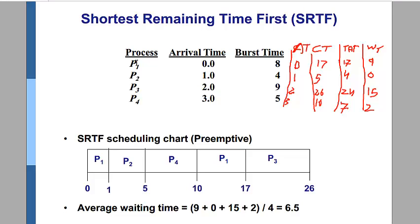So P1 comes first and will run from 0 to 1, because P2's arrival time is 1. At time 1, we have two processes in the CPU queue and we compare their burst times: P1 has 8 and P2 has 4. P2 has priority because it has the shortest remaining time.